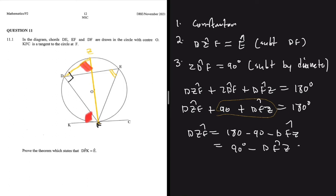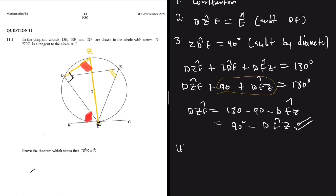Now we are just left with proving that angle DFK is also equal to 90 minus DFZ and we are gonna be done. If you look on our diagram, you will realize that this angle KFZ is 90 degrees. That is because where the radius and the tangent touches, they form 90 degrees.